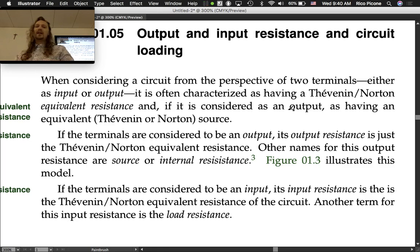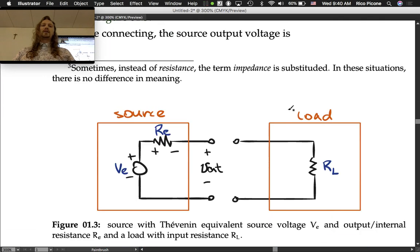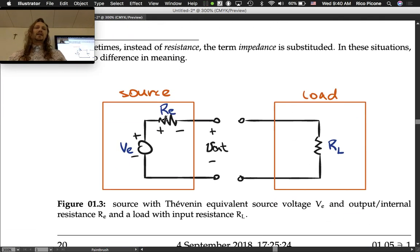For instance, batteries have what we call typically an internal resistance or an output resistance for the battery. Figure 1.3 illustrates this model. The idea is that if you have a source, if your circuit is acting as a source, then you have a Thevenin or Norton equivalent source.